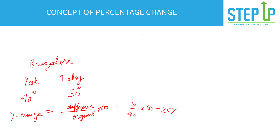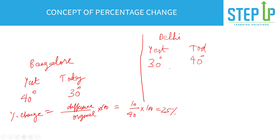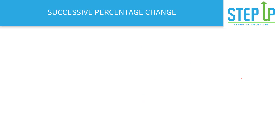One important thing to note is the base. Let's say we are in Delhi and the temperature has increased from 30 degrees to 40 degrees. Although the degree change is the same — 10 degrees — the formula gives 10 upon 30, into 100, which is 33.33%. So the degree change is the same, but because the base was different, the percentage change is different. Very simple but important.